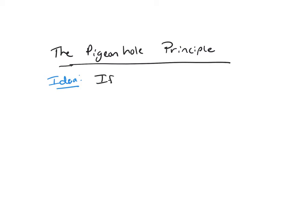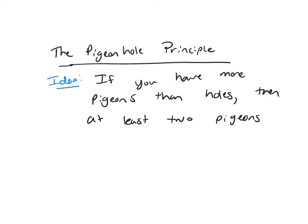The idea is if you have pigeons and you have holes for them to go in, and if you have more pigeons than holes, then at least two pigeons are put in the same hole. So if you have more objects than you have holes to put them in, then at least two of those objects have to go in the same hole.